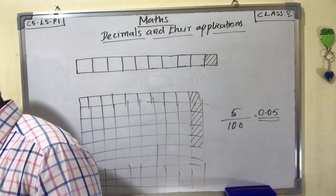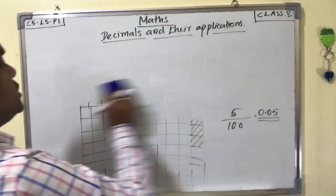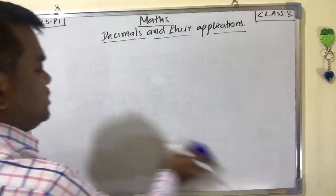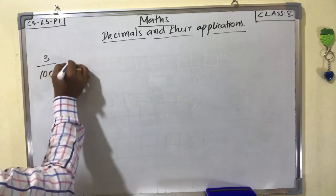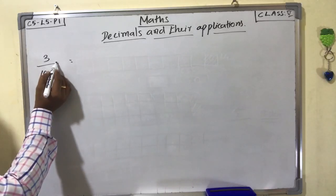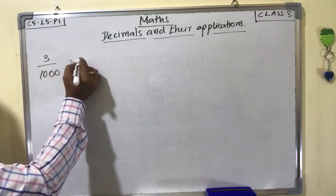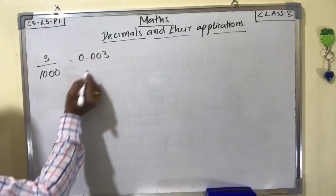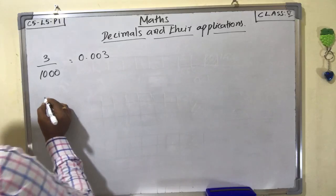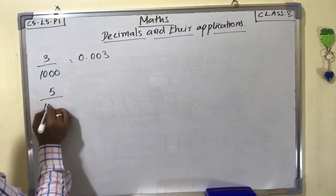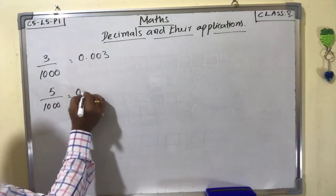Now some examples: convert fractions into decimals. First question — 3 by 1000. Move the point three decimal places to the left; since there is only one decimal place, add two zeros: 0.003. Next, 5 by 1000 — same process, move the point three decimal places left, add two zeros: 0.005.